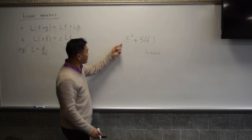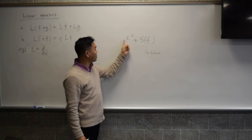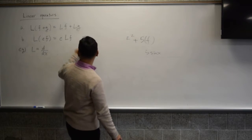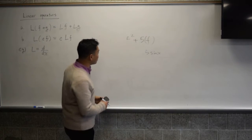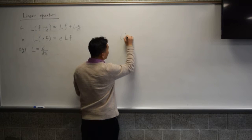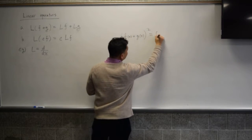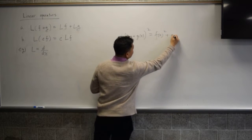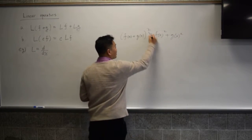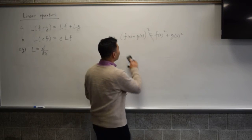The operator I was about to erase — the one with the squared term — is not a linear operator because of that squaring. The squared term destroys the first property. It is not true that (f(x) + g(x))² equals f(x)² + g(x)².